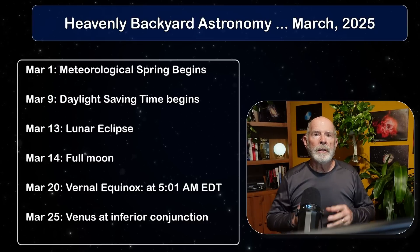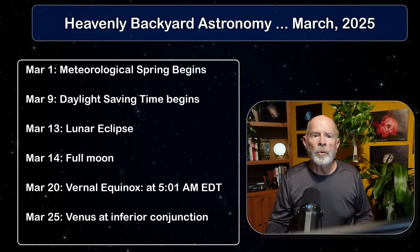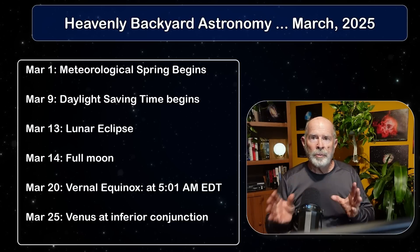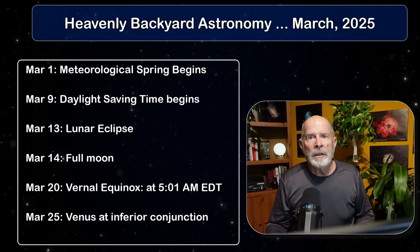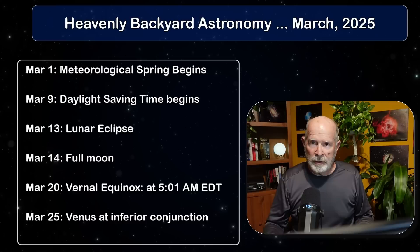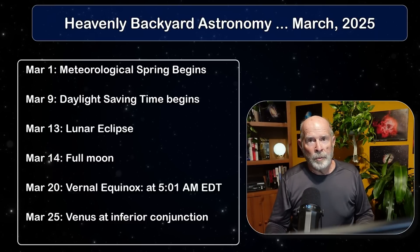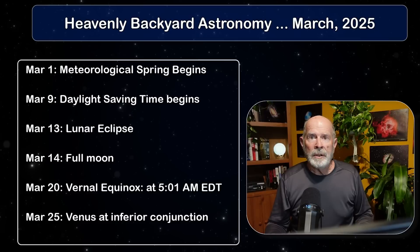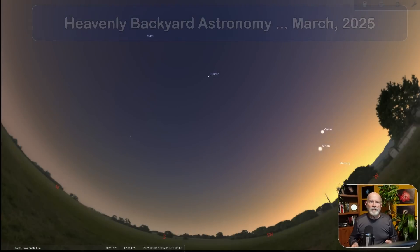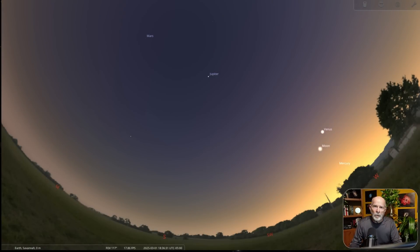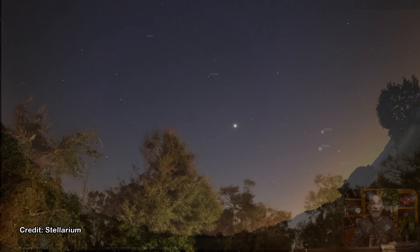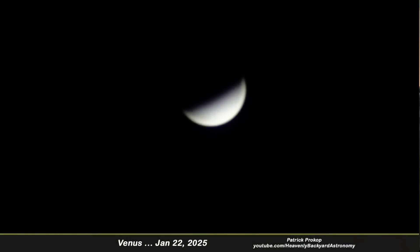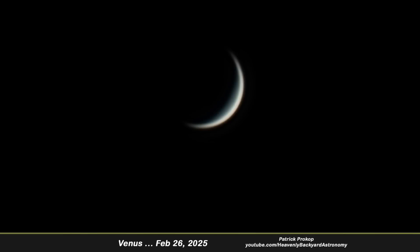On March 25th, the planet Venus will reach inferior conjunction — it will be directly between the Earth and the Sun and disappear from view. Ironically, Venus was at its most brilliant this cycle on Valentine's Day, February 14th. Venus has been dominating the western evening sky as the third brightest object in the sky, outshone only by the Sun and the Moon. It will leave the evening sky by mid-March and reappear as the morning star sometime in April.